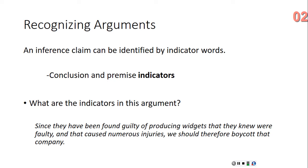An inference claim can be identified by indicator words. There are conclusion indicator words and premise indicator words. Some examples of conclusion indicators are: therefore, thus, so, hence, consequently — you can find more examples on pages six and seven of your textbook, third edition. Some premise indicators are: because, since, given that, and assuming that. Let's see some indicators in an actual argument.